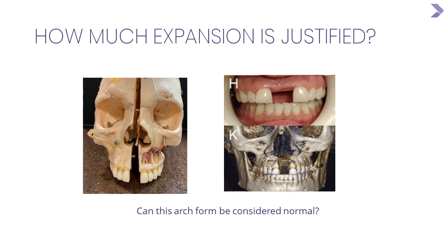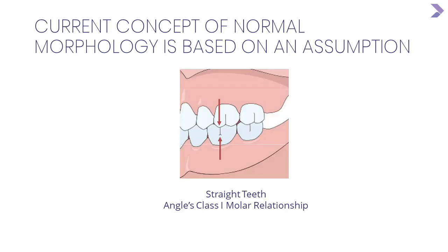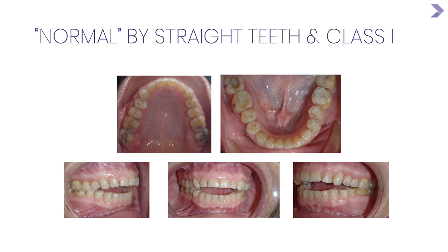Even if the patient feels better, what have we really accomplished? Was this much change on the patient's face truly necessary? Our careers as orthodontists are based a lot on assumption — as long as teeth are Class I and straight, we think it's normal. But that's not always true. A patient can have very straight teeth with Class I occlusion and still not be normal. Occlusion and straightness alone cannot define the normal shape and size of the dental arch.